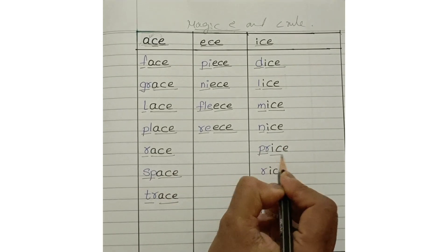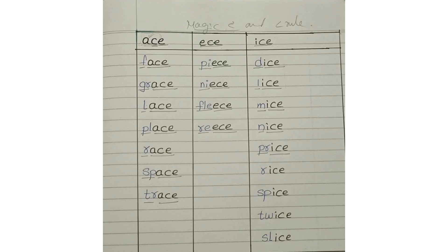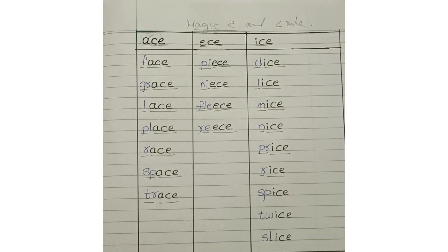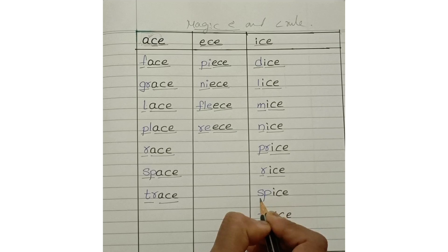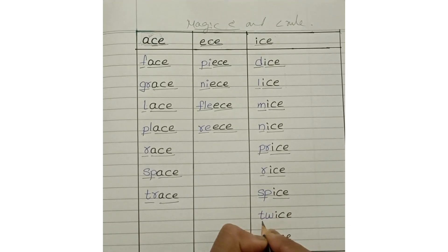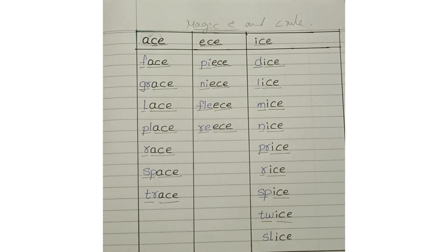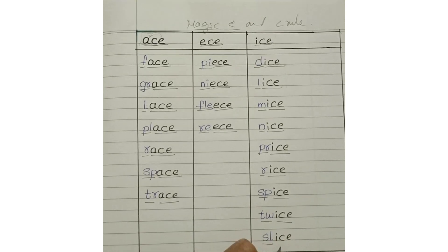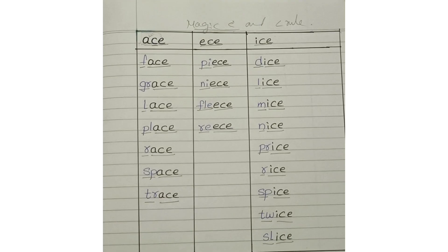Pr + ICE: price. R + ICE: rice. Sp + ICE: spice. Tw + ICE: twice. Sl + ICE: slice.